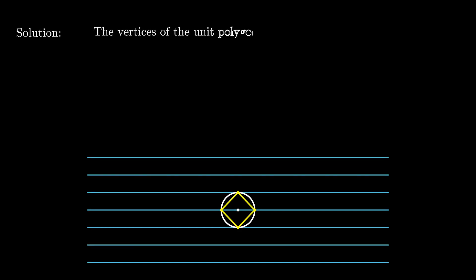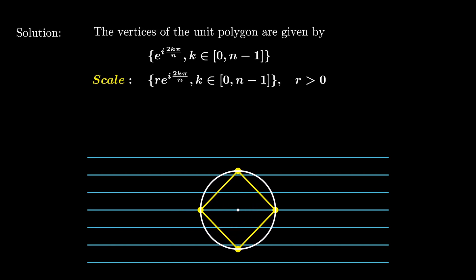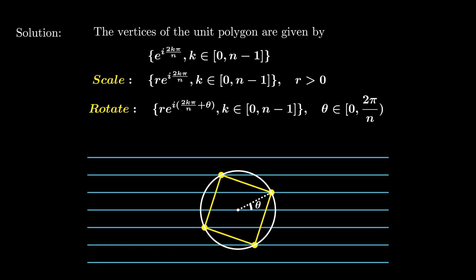We are going to use complex numbers to denote the location of the vertices. For the unit polygon, the vertices are given by e to the power i times 2kπ/n. If we scale the polygon, we multiply the numbers by a positive scalar. If we rotate the polygon, we add an angle into the exponent. Note that because of the symmetry, it is enough to consider angles between 0 and 2π/n.